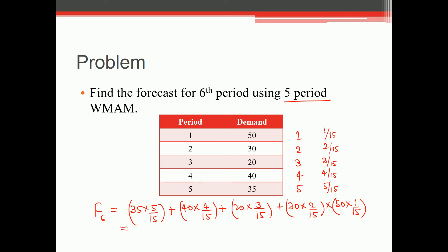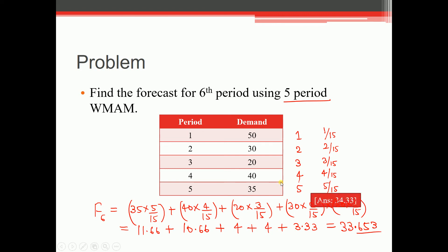Solving: 35 × 5/15 = 11.66, 40 × 4/15 = 10.66, 20 × 3/15 = 4, 30 × 2/15 = 4, 50 × 1/15 = 3.33. Adding: 3.33 + 4 + 4 + 10.66 + 11.66 = 33.653. So the correct forecast for the sixth period using the five-period weighted moving average method is 33.653.